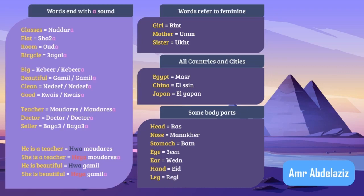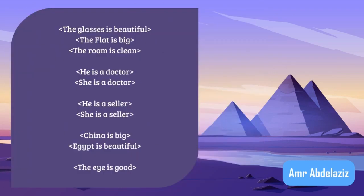So, those are the four cases of feminine in Arabic. Now it's exercise time to practice what we have already learned. How do you say the following in Egyptian Arabic?